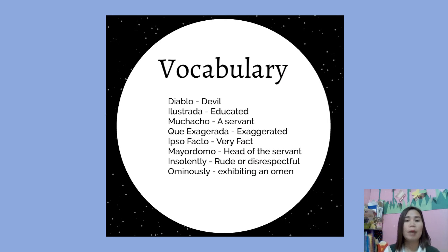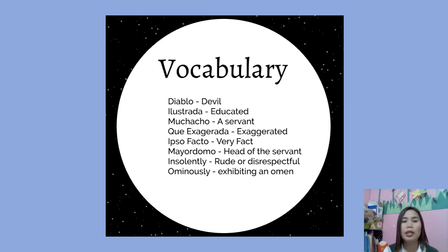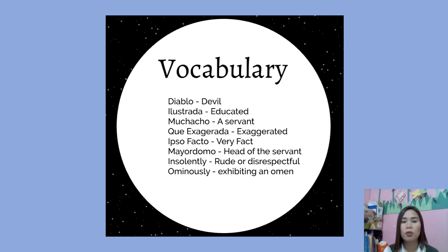Here are some vocabulary words or difficult words found in the play. Some of these are Spanish words. For example, 'Diablo' means devil. Also, 'ominously' means exhibiting an omen — something bad is going to happen.